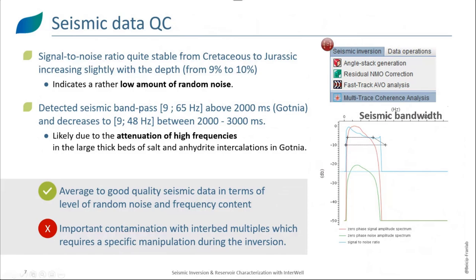Regarding the detected seismic bandpass, above 2000 milliseconds — which is above the Gotner formation — we have a bandpass of 9 to 65 Hz. This bandpass decreases to a range between 9 and 48 Hz between 2000 and 3000 milliseconds. We interpret this decrease as due to the attenuation of high frequencies in the large thick beds of salt and anhydrite intercalation in the Gotner formation. Overall, we have average to good seismic data in terms of random noise and frequency content. However, we have an important contamination with interbed multiples, requiring specific manipulation during the inversion.